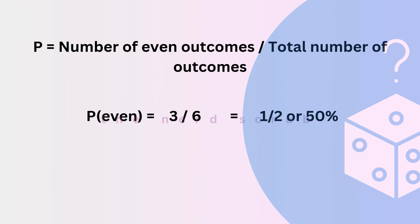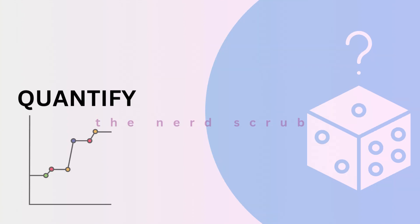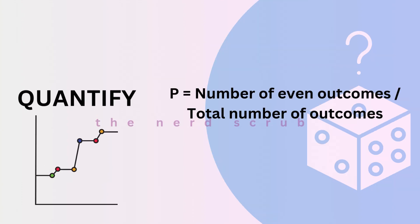The key takeaway here is that probability helps us quantify how likely an event is to happen based on the total number of possible outcomes.